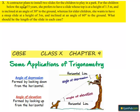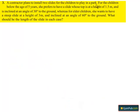Moving on to the third question. A contractor plans to install two slides for children to play in the park. For children below age 5 years, she prefers a slide whose top is at a height of 1.5 meters and is inclined at an angle of 30 degrees to the ground. For the elder children, she wants a steep slide at a height of 3 meters, inclined at an angle of 60 degrees to the ground. What should be the length of the slide in each case?